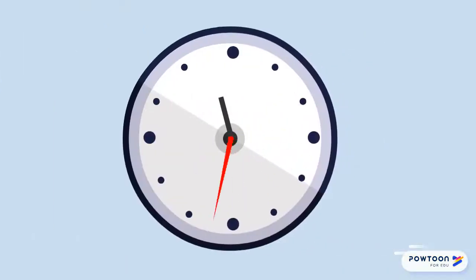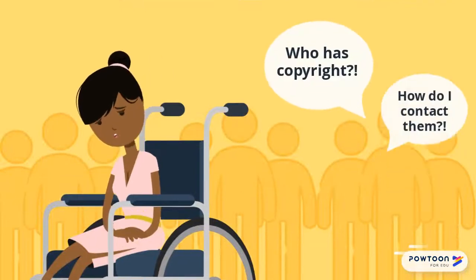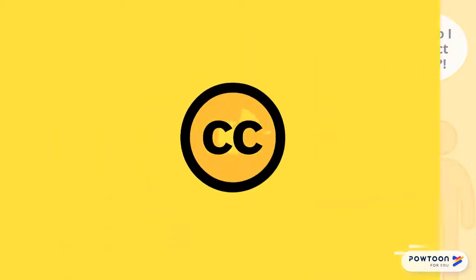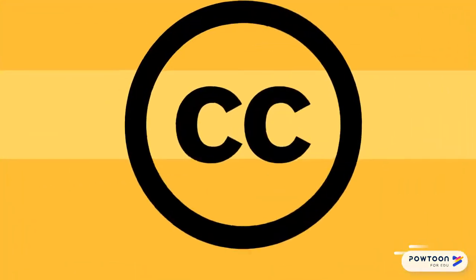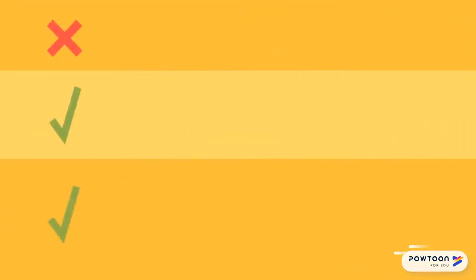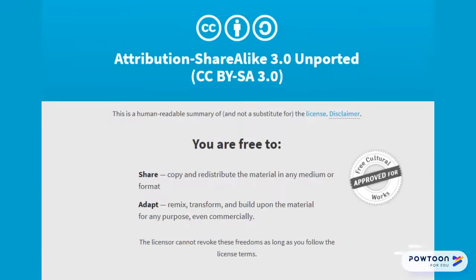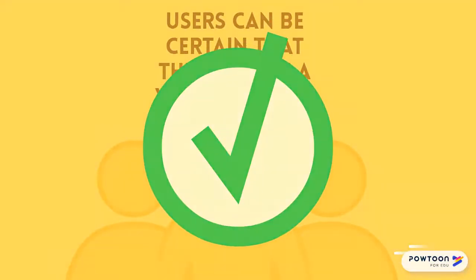Getting permission can be time-consuming and complicated for both the creator and the user. This is where Creative Commons can help. Creative Commons exists to make permissions explicit and straightforward. Creative Commons licenses use icons and simple language so that creators can make their intentions clear and users can be certain that their use of a work is legal.